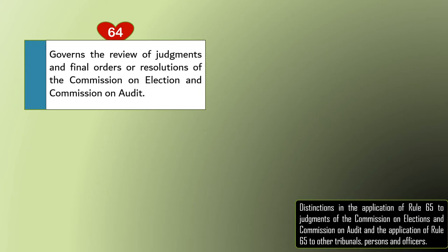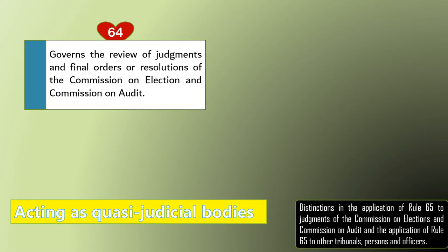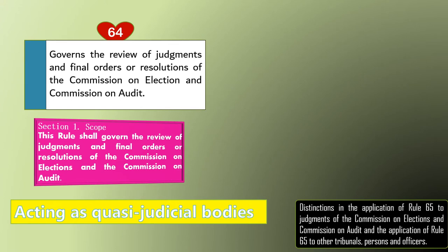When you talk about Rule 64, remember your constitutional bodies. There are three constitutional bodies or constitutional commissions: the Civil Service Commission, the COA, and the COMELEC. But Rule 64 refers only to COA and COMELEC — very limited. It only governs the judgments and final orders or resolutions issued by the COMELEC and COA. Take note that these two constitutional commissions must be acting as quasi-judicial bodies, and the judgments or final orders must be rendered en banc, not in division. Our basis is Section 1 of Rule 64.